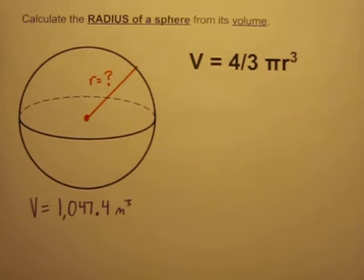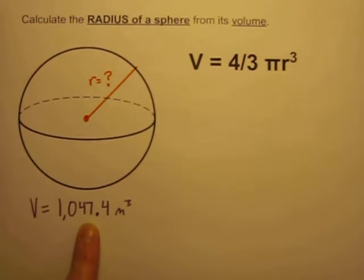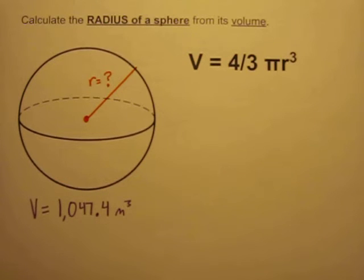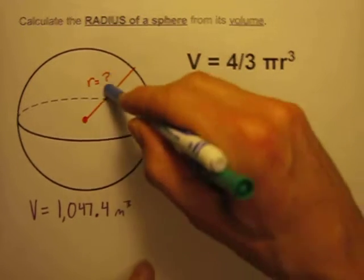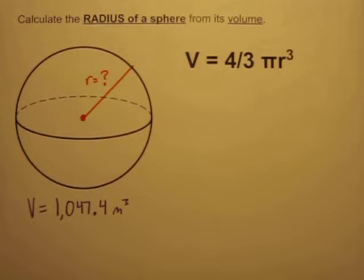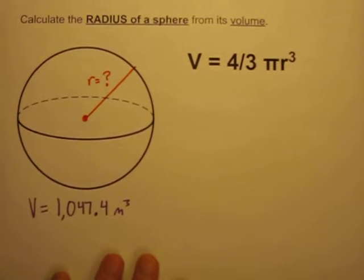Often when you're working with 3D shapes, you'll be given some 3D shape like this sphere and given some measurements of that shape, and you'll be asked to calculate the volume of it using the formula for the volume of a sphere. But sometimes the problem will ask you to work backwards. It will give you the volume, in this case 1,047.4 cubic meters, and ask you what would the radius have to be to get that volume. That's what I'd like to show you in this video.